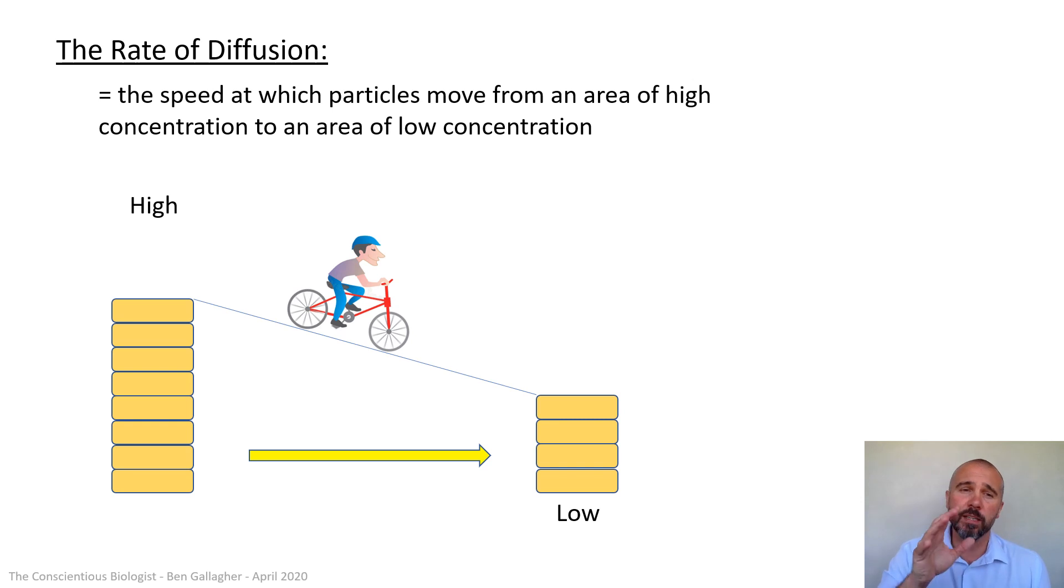So the factor that affects the rate of diffusion is the concentration gradient. So we can now adapt that first sentence to a more full explanation that the speed at which particles move from an area of high concentration to an area of low concentration depends on the concentration gradient. Gradient is the steepness, concentration gradient just means the difference between the concentrations. At the start it was big, and then it got less. Okay, the bigger the difference, the faster the particles will spread out.